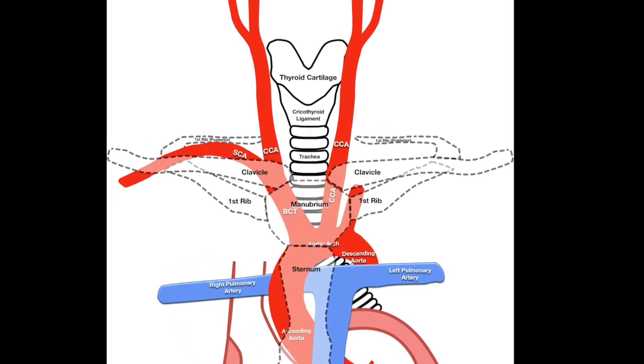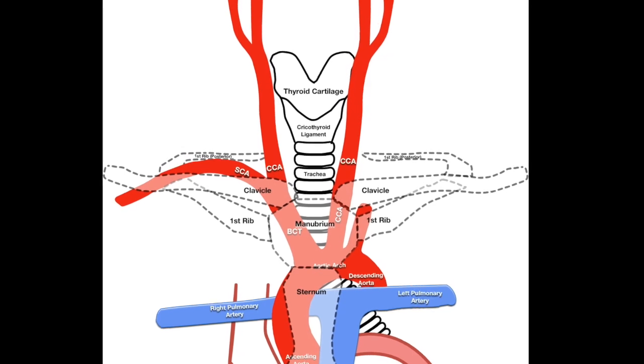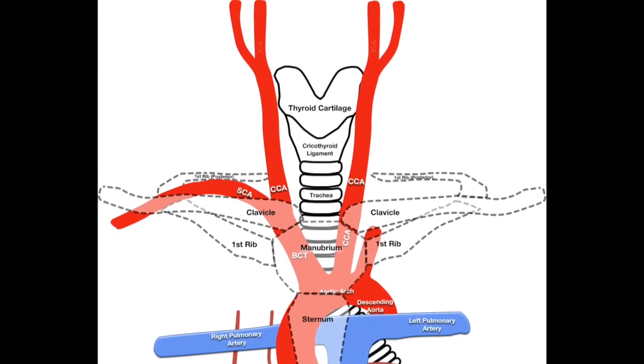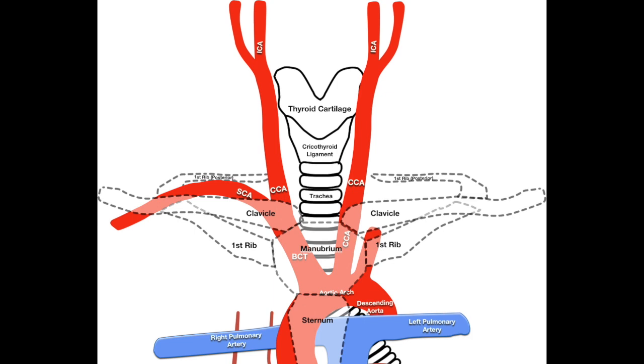It offers no branches until reaching the upper border of the thyroid cartilage. Here, it terminally bifurcates into the internal carotid artery posteriorly which supplies intracranial tissues and the external carotid artery anteriorly which supplies the neck, visceral cranium and scalp.